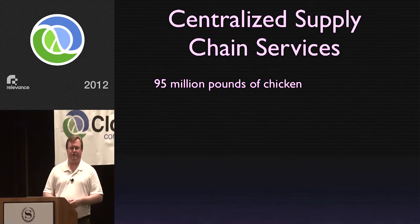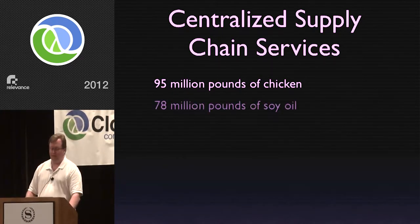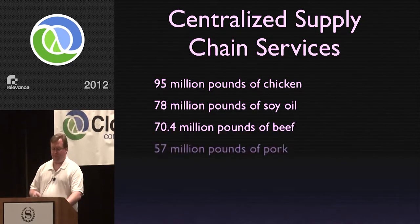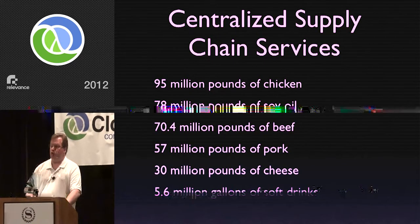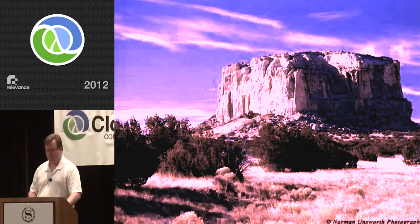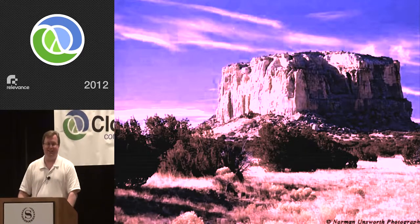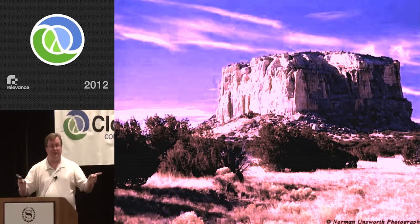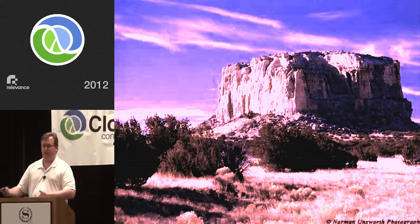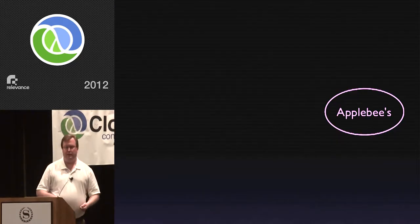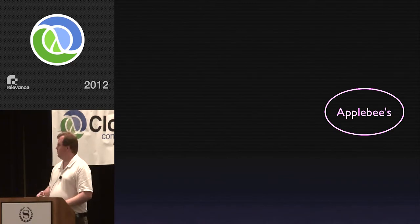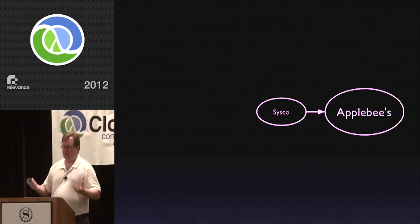That's a staggering number — it's hard to visualize 95 million of anything. To put it in perspective, 95 million pounds of chicken would make a cube of chickens about the size of this mesa. This outfit manages the distribution of these chickens, and if we start mapping out what the supply chain looks like, it looks a lot less like food to Applebee's and a lot more like a complicated distribution network.